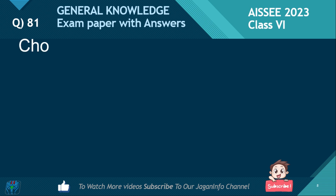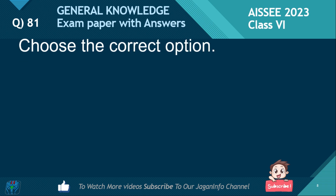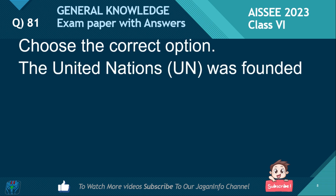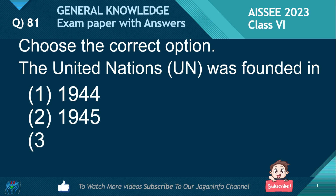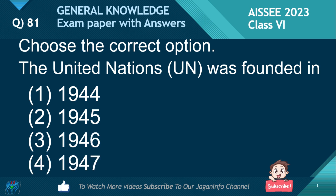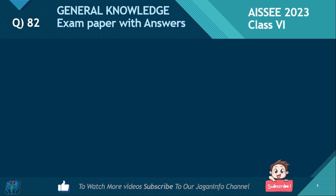Choose the correct option. The United Nations was founded in: 1944, 1945, 1946, or 1947. The right answer is October 24, 1945.